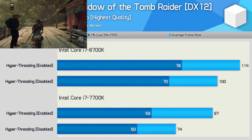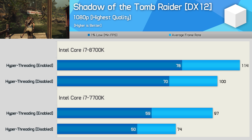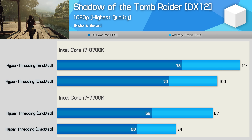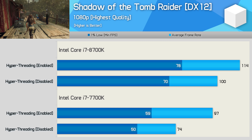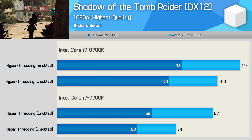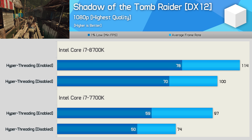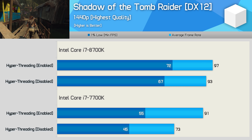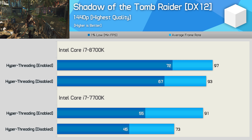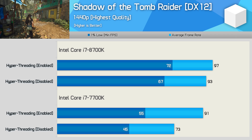Shadow of the Tomb Raider is a very demanding title, and we get a clear reminder of that here. The 8700K saw a 10-12% performance drop-off with hyperthreading disabled, while the 7700K saw a 24% drop-off, though the 1% low margins were similar to what we saw with the 8700K. Disabling SMT does have a big impact on performance in this title. Even at 1440p the effect is significant for the 7700K, while the 8700K saw a small decline — nothing like the 20% drop-off the 7700K suffered.